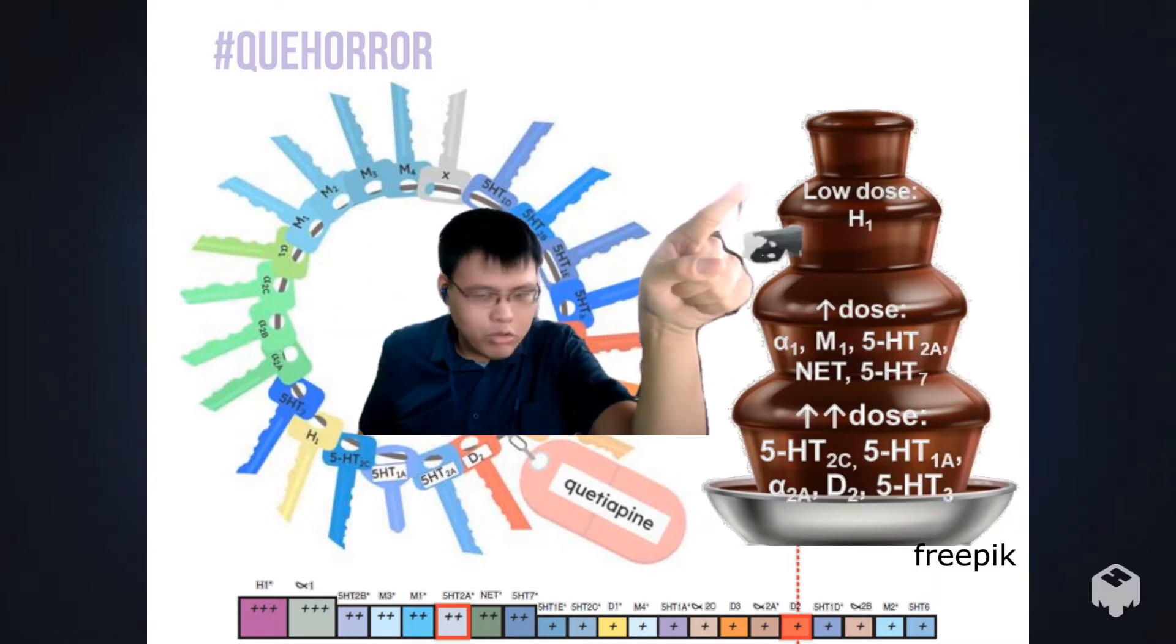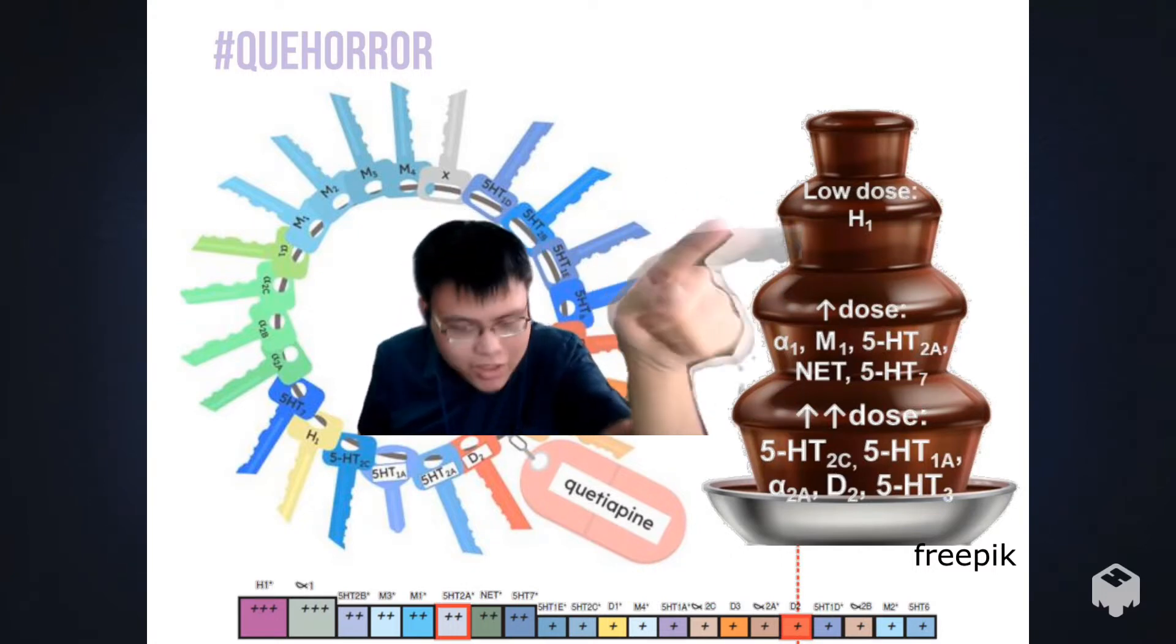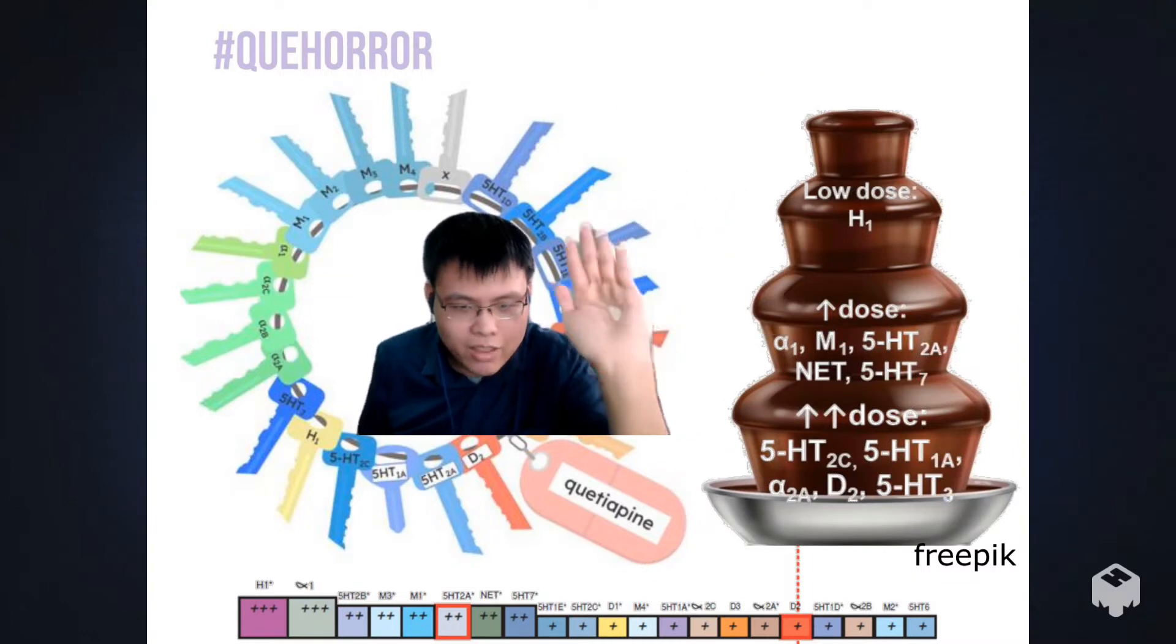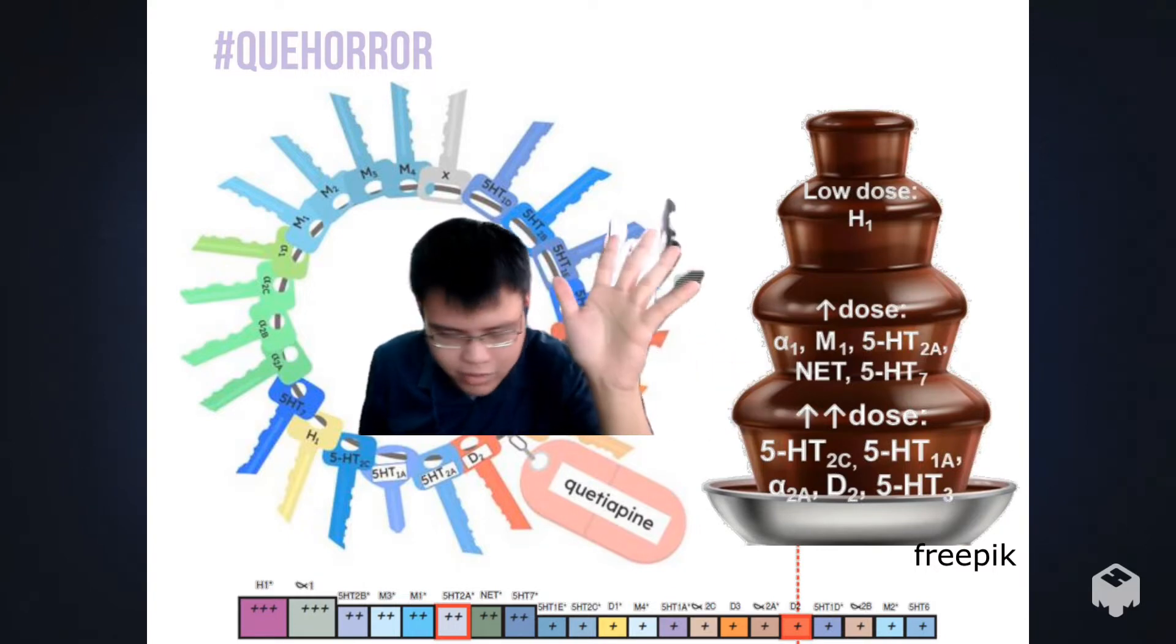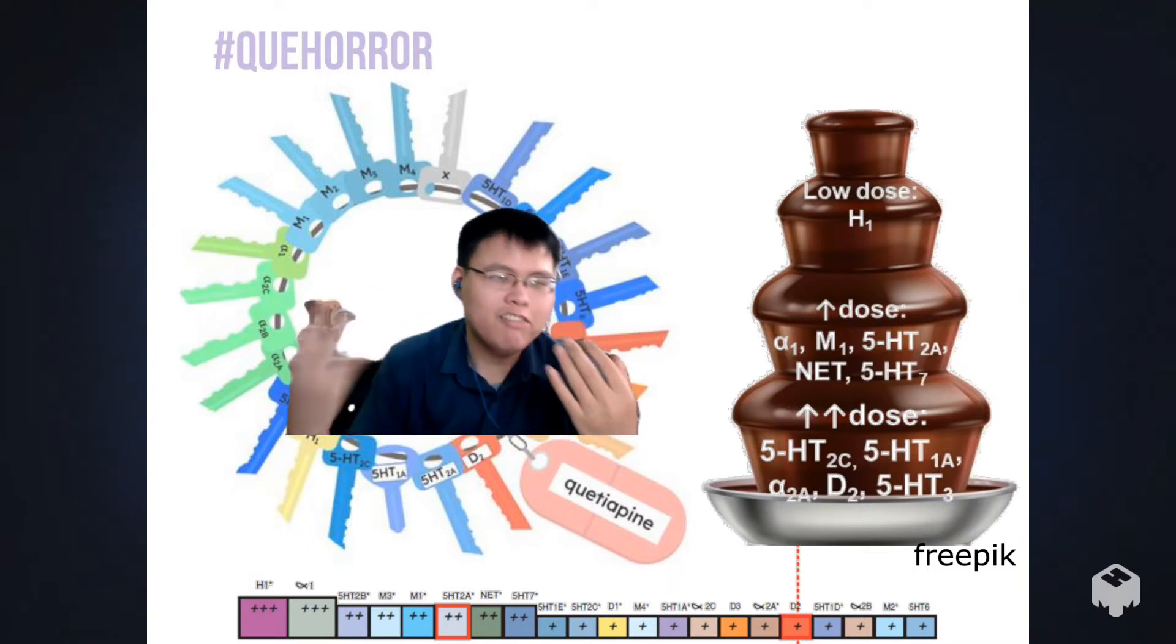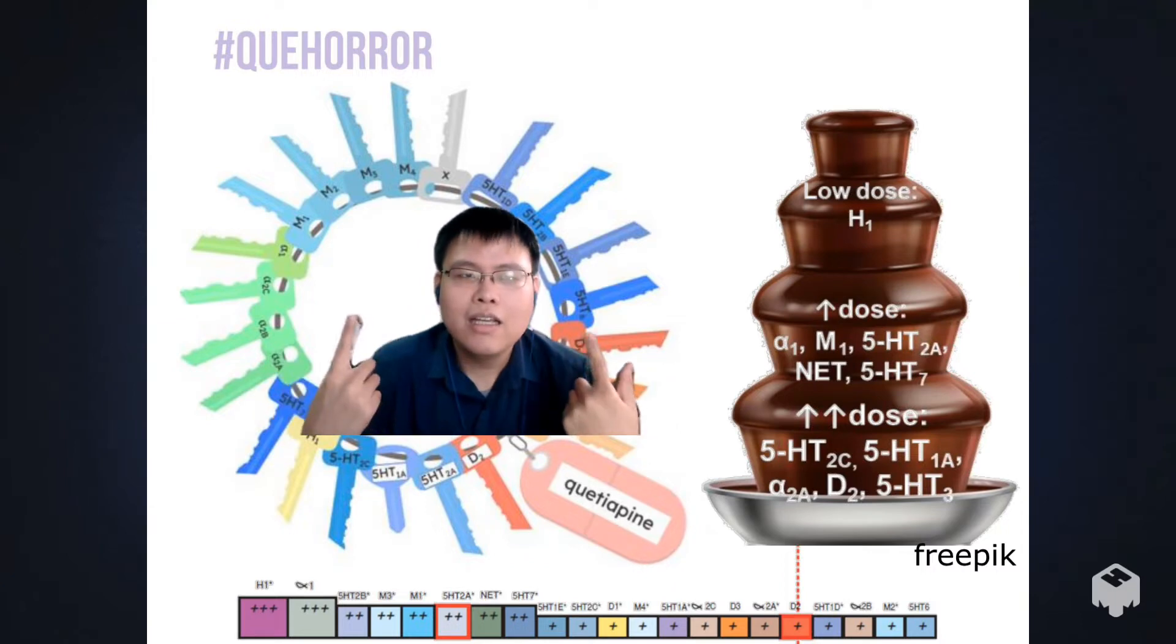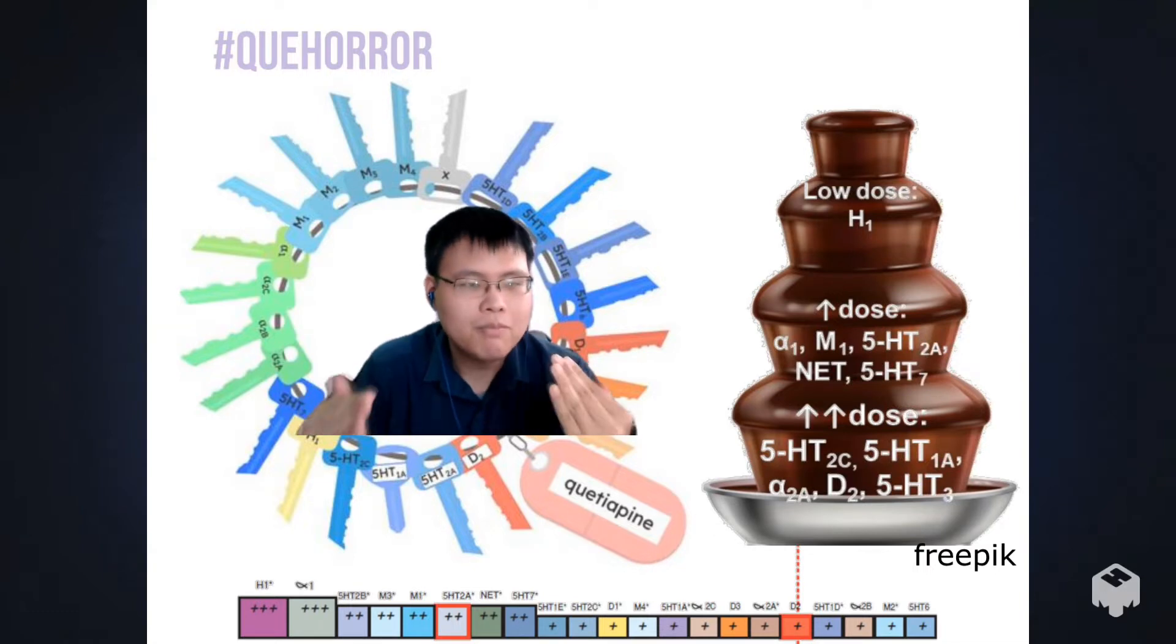But beyond that, remember how I said that just because a drug has its favorites doesn't mean that the chocolate isn't going to splatter when you pour at the top? Yeah, sure, at the low doses it's gonna fill up the H1 receptor first because it has a higher affinity for that, but it doesn't mean that the chocolate is not gonna splatter about and kind of hit the other receptors at the bottom. Some of those receptors are very sensitive—you just have like a little binding to them and they're going to exert their effects.